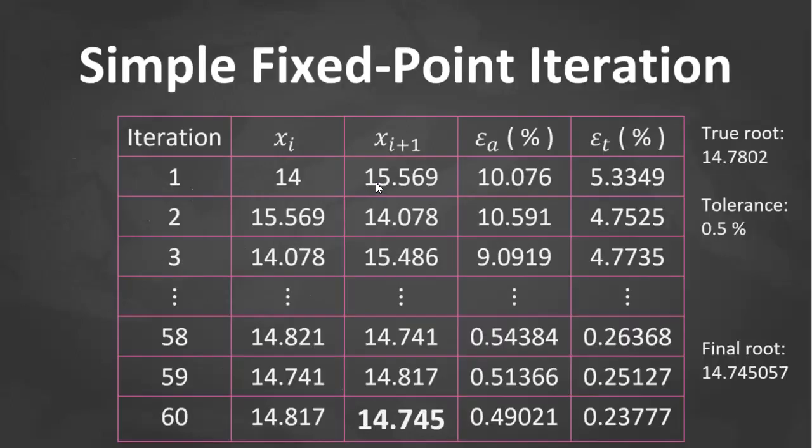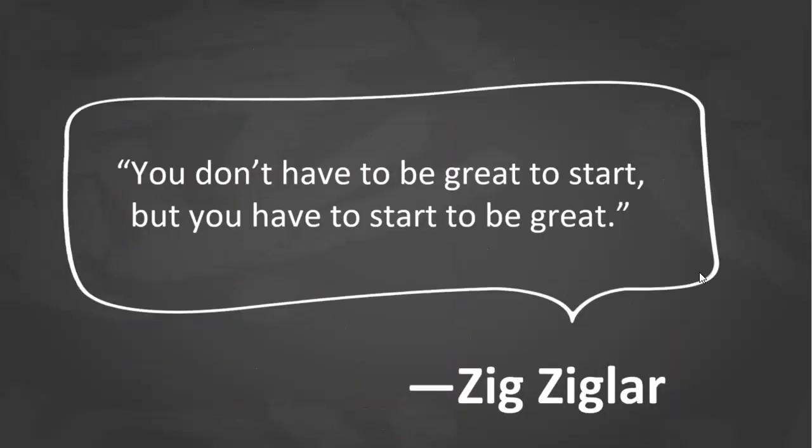Now, if we solve that equation using the fixed point iteration method based on the pseudocode we showed, we'll have these values. As you can see, it took 60 iterations to reach the percent relative approximate error less than 0.5. And the final root estimate is 14.7457. And that's it.